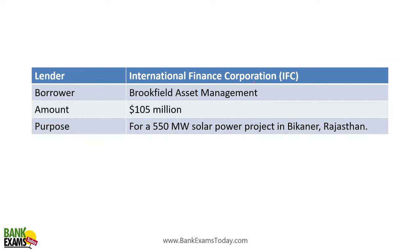International Finance Corporation (IFC) — the borrower is Brookfield Asset Management Company, and the loan amount is 105 million dollars for a 550 megawatt solar project in Bikaner, Rajasthan.